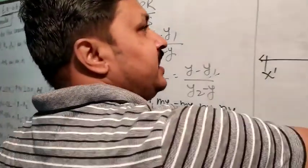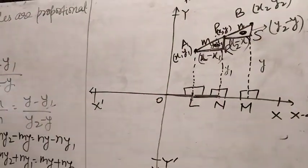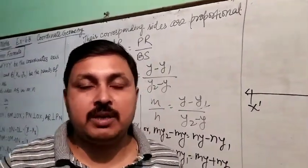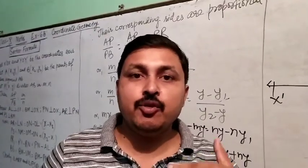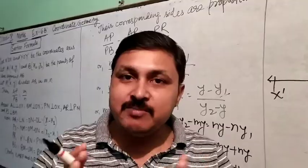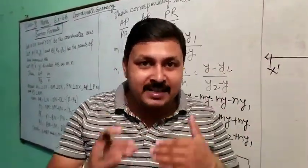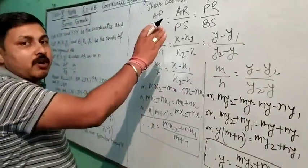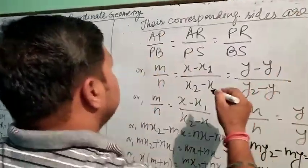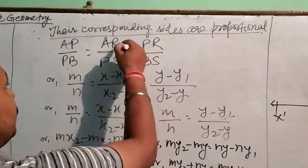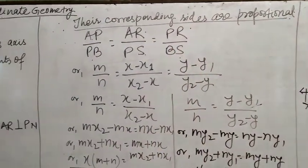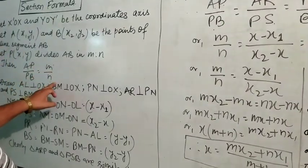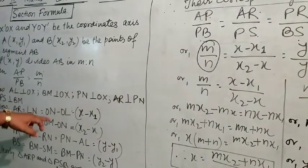Both triangles are similar, so their corresponding sides are proportional. In the next chapter, in the third theorem, you must read the BPT theorem — the Basic Proportionality Theorem — which states that when two triangles are similar, their corresponding angles are equal and their corresponding sides are proportional. So in this formula we use that theorem: AP by BP equals AR by PS equals PR by BS. Here AP equals m and BP equals n, so AP by BP equals m by n.